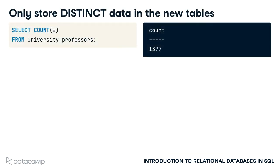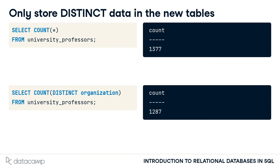One advantage of splitting up university professors into several tables is the reduced redundancy. As of now, university professors holds 1377 entries. However, there are only 1287 distinct organizations, as this query shows. Therefore, you only need to store 1287 distinct organizations in the new organizations table.